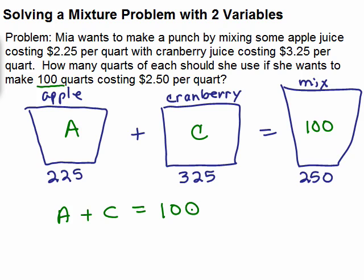We can get two equations from this picture. The first equation has to do with the amount of juice — not the cost at all. We're mixing A quarts of apple juice and C quarts of cranberry juice, and adding those together gives 100 quarts. So my first equation is A plus C equals 100. The second equation is going to be about cost.